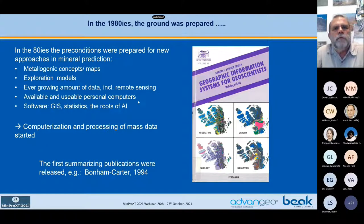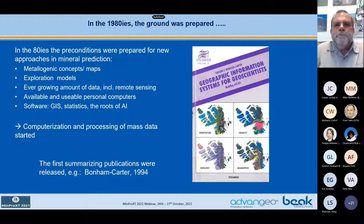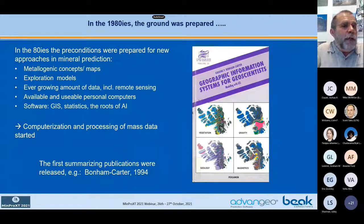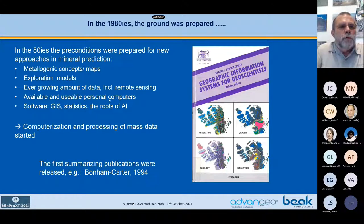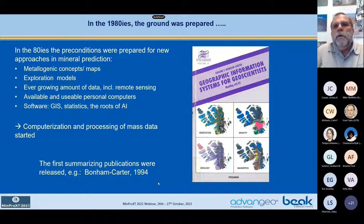Then in the 1980s, the ground was prepared to apply all this knowledge in the environment of computers. We had knowledge, we had data, we had the first exploration models, we had computers and we had software. The first book summarizing it was from Bonham Carter in 1994, the book 'Geographic Information Systems for Geoscientists.'